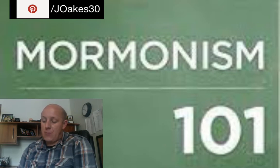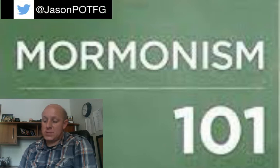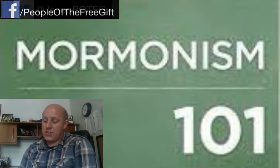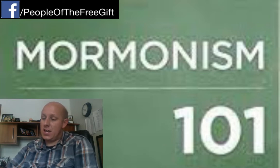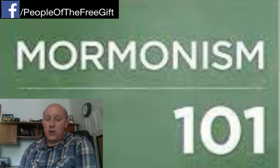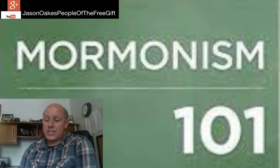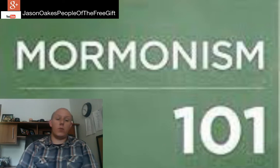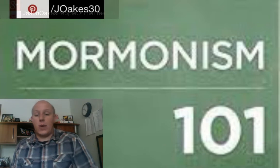Scripture: Bible, Book of Mormon, Doctrine and Covenants, Pearl of Great Price. Temple: a present-day temple used to practice the ordinances and ceremonies of the gospel of the LDS Church on behalf of the living as well as the dead. Trinity: three gods — a God called the Father, a God called the Son, a God called the Holy Ghost. You can see right there they have a misunderstanding of what we believe when we talk about the Trinity.